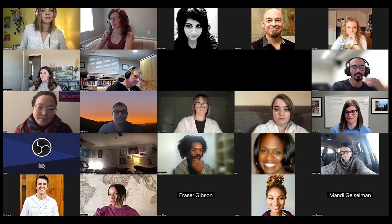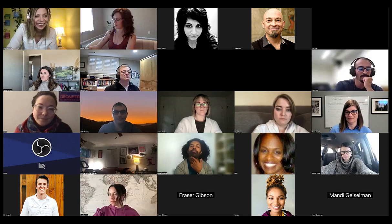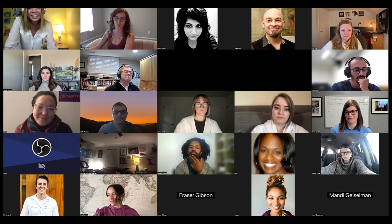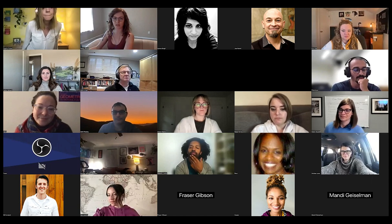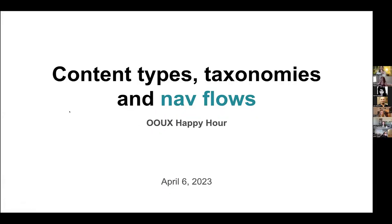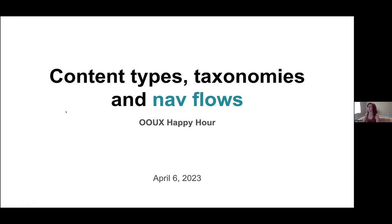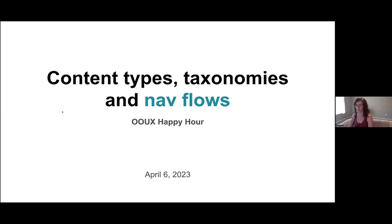Quite the lead up — nav flows, y'all. I'm going to share my screen. I'll be switching between my deck and my Miro board because some of these do best when we can zoom in — there's a lot of information in them. We're going to talk about content types, taxonomies, and nav flows — essentially everything a nav flow can do and visualize in a system that traditional artifacts cannot, including the sitemap.